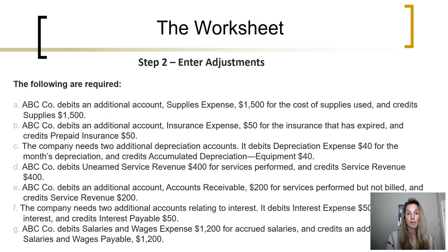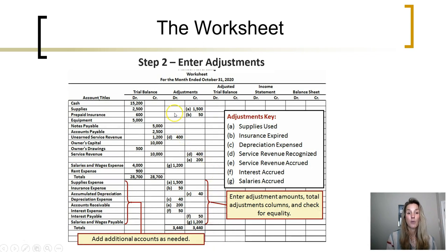Once the company identifies what adjustments need to be made — and the adjusting process is covered in separate discussions — this company identified all these different adjustments that needed to be made. Using this adjustment information, they figure out what accounts are affected. Here in adjustment A, the company is recording the amount of supplies used. The adjustment would be to decrease the supplies asset account with a credit and a debit to supplies expense. Those are entered into the adjustment columns showing whether the adjustment is a debit or credit to that account.